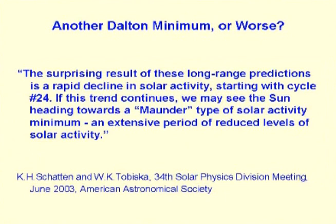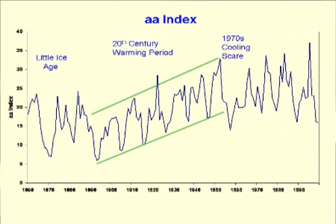I would be doing you a disservice if I left you with the impression that sunspots and solar cycles were the only manifestations of varying solar activity. This is a graph of the AA Index, which is generated by the solar coronal magnetic field strength. The AA Index was first measured in 1868 when the Earth was still in the Little Ice Age. The long-term increase in the AA Index in the 20th century, which you see bound by the green lines there, corresponds to the warming of the 20th century.